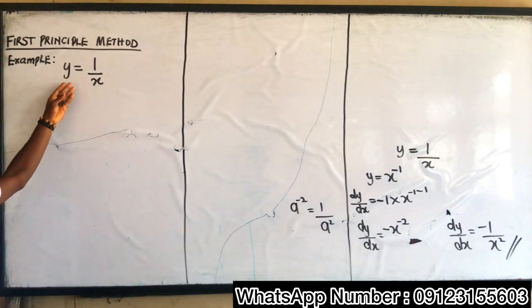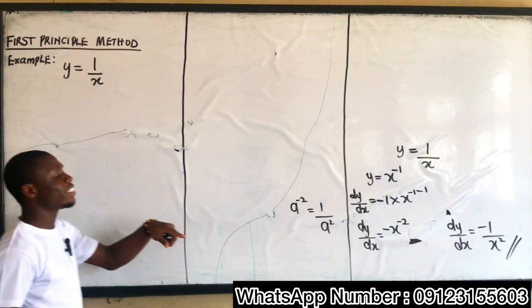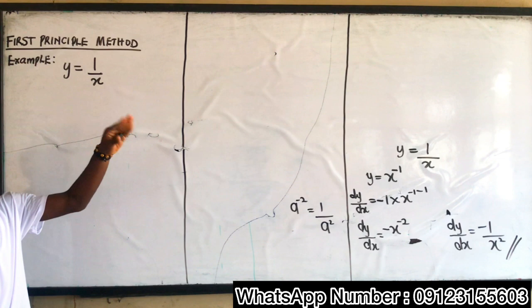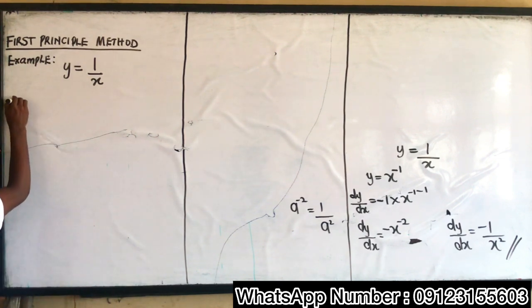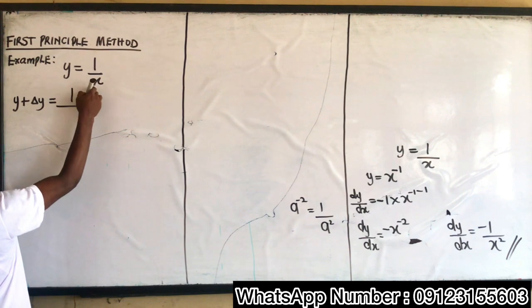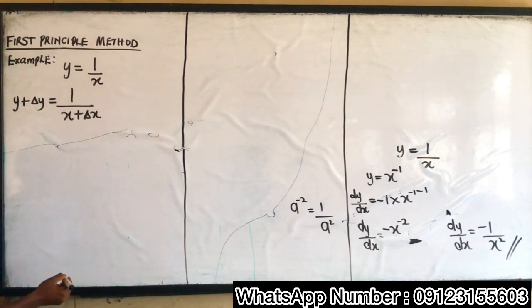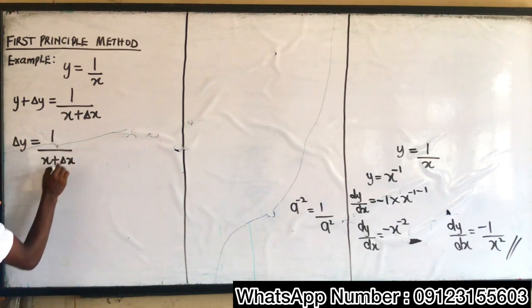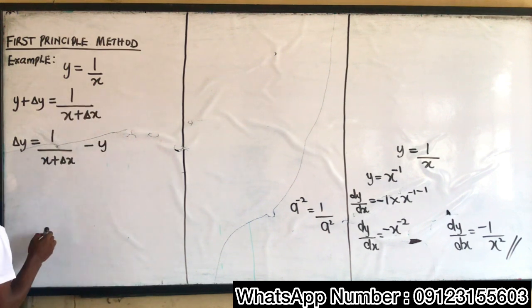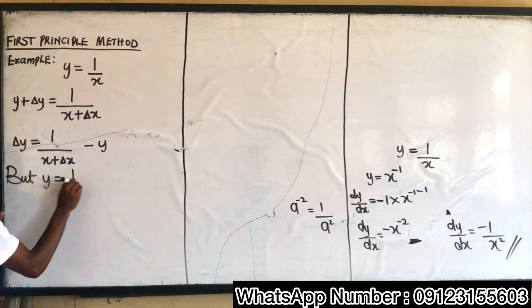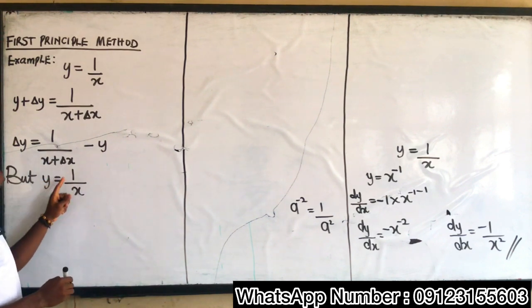Now let's apply the first principle method and see if our answer is comparable. In the first principle method, you change y to y plus Δy and x to x plus Δx. So I have y plus Δy is equal to 1 over (x plus Δx). Taking y to the other side, Δy is equal to 1 over (x plus Δx) minus y. But we said y is equal to 1 over x.